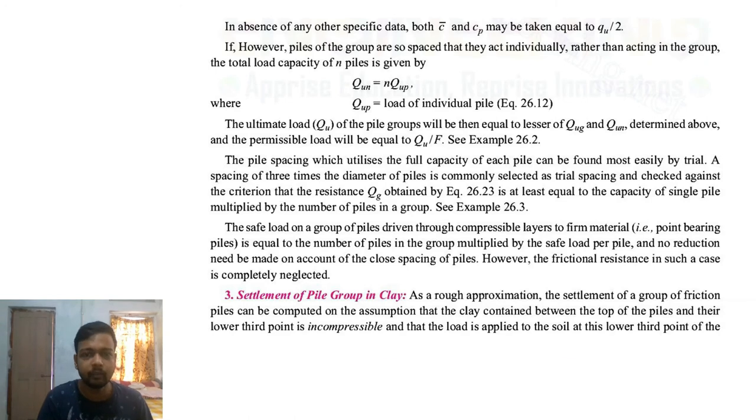After this, you know Q_group and you know Q for one pile, so you can find the efficiency. The ultimate load Q_u of the pile group will be equal to certain Q_u, determined about the particular load equal to Q_u divided by the factor of safety. After this you find it, and then you have to find the settlement, which I discussed already in my previous video.